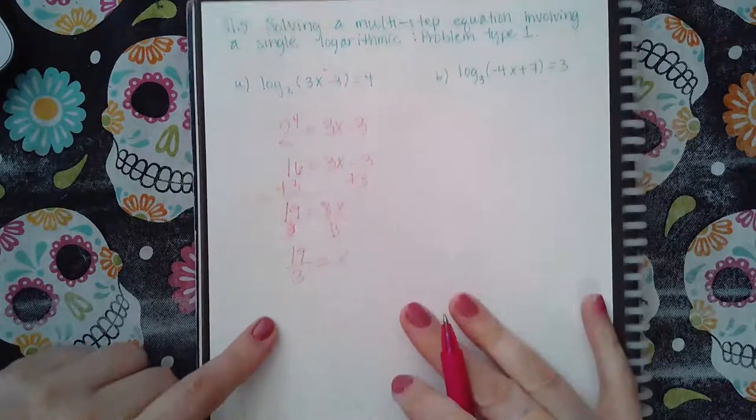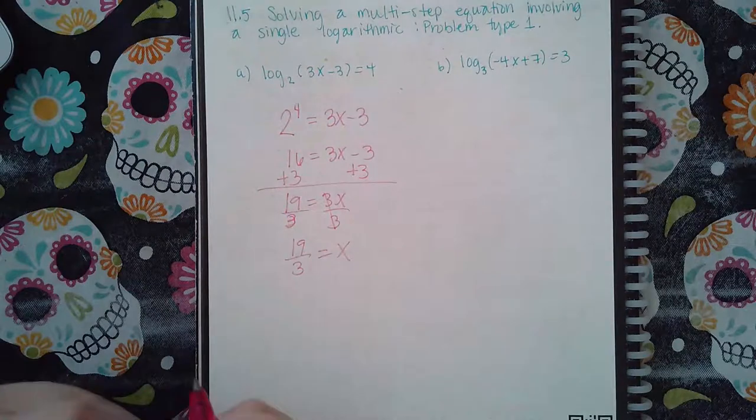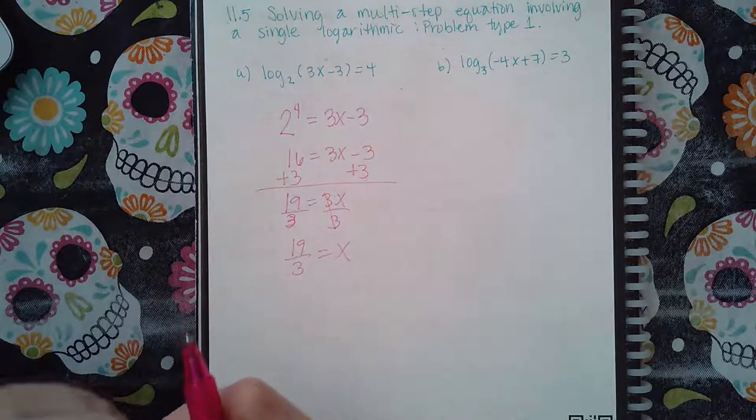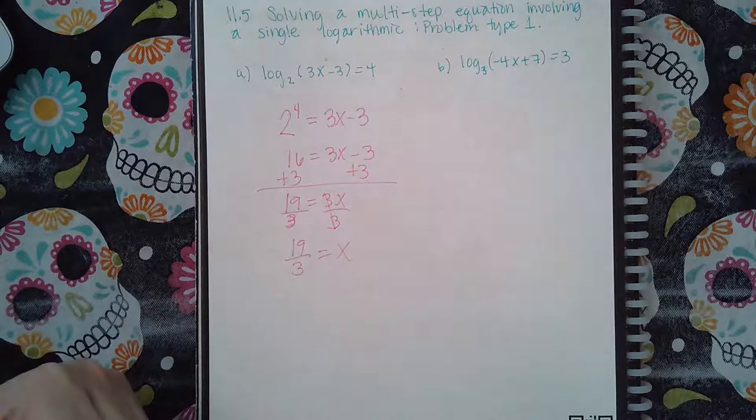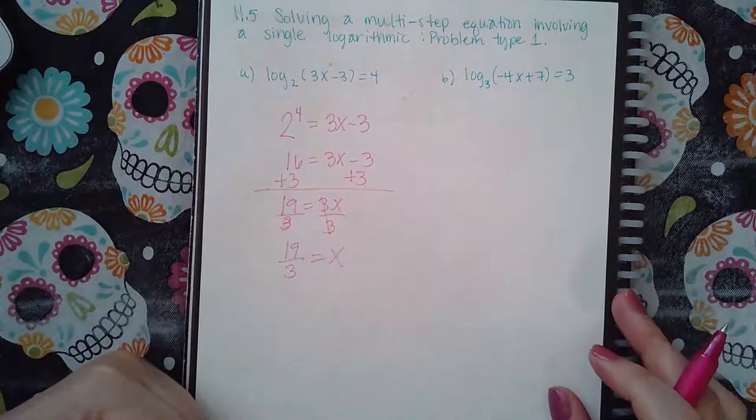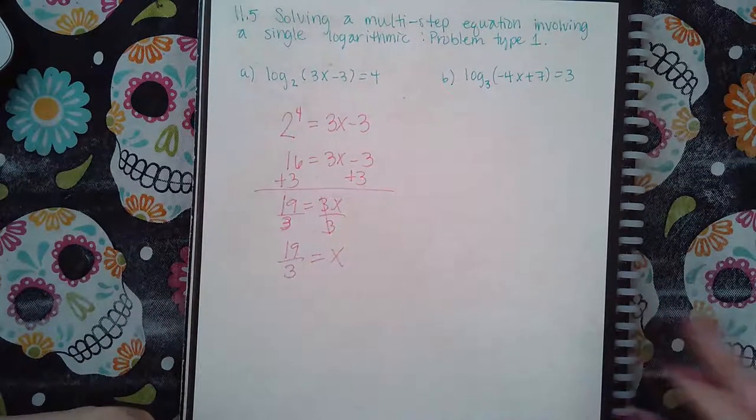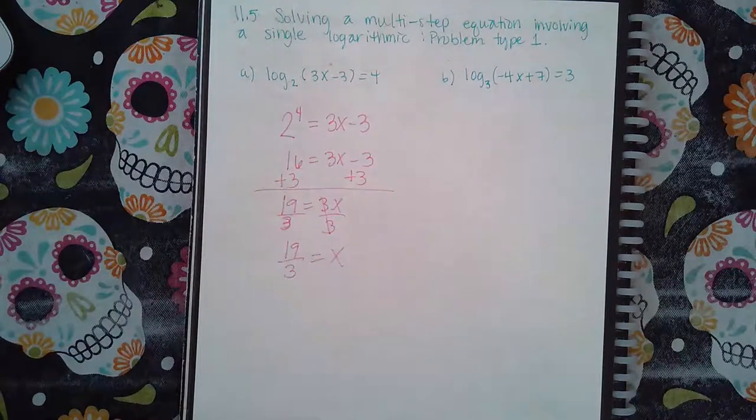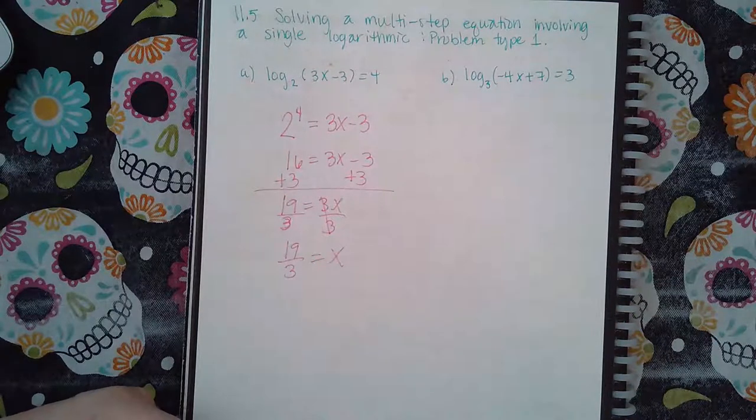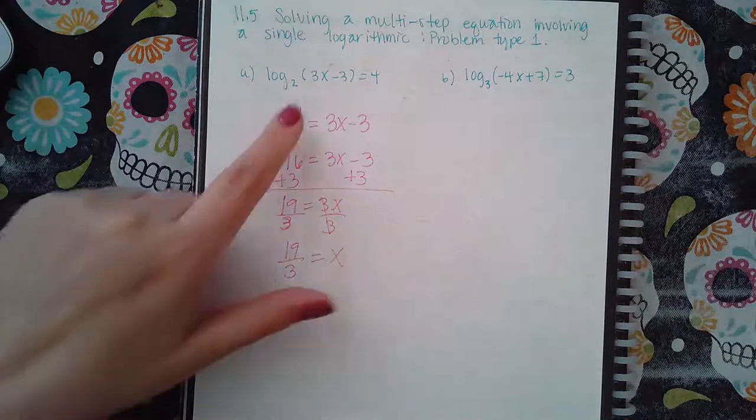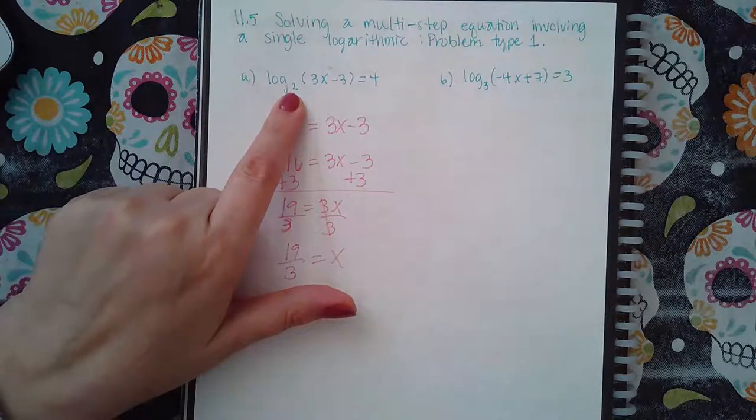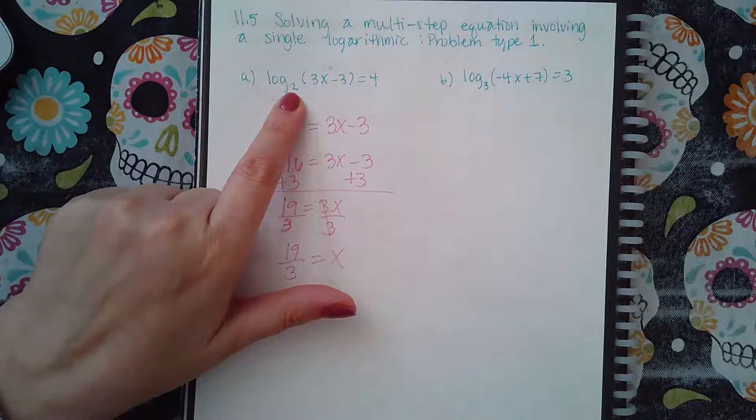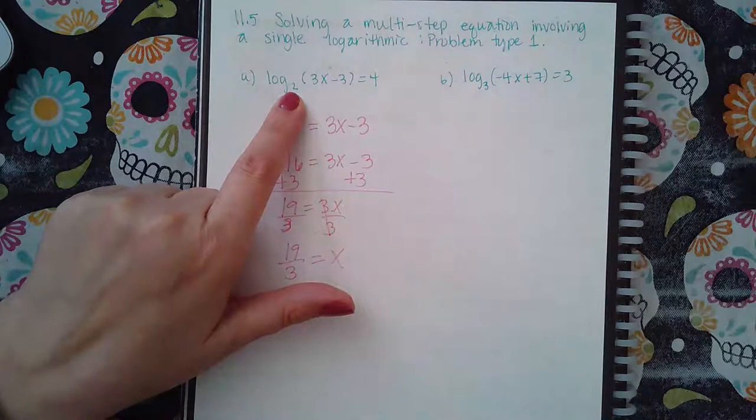The only thing you have to do is make sure that whatever you get for x, it doesn't make a base negative and it doesn't make an argument negative. Those are the only two things you have to worry about. It cannot make a base negative and it cannot make an argument negative. Now my base is 2, that's not gonna change no matter what x is, and 2 is positive, so the base is fine.